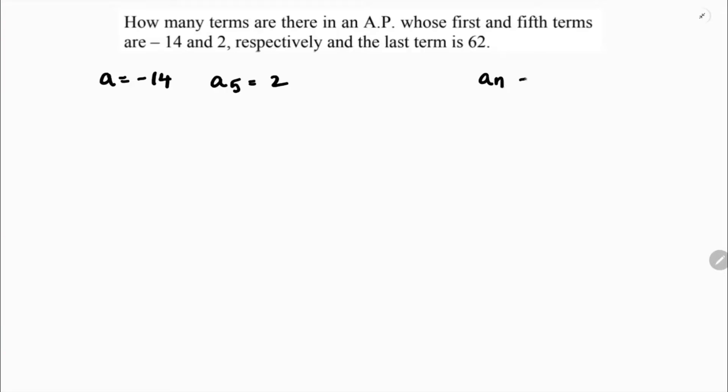Fifth term is given A5 which is 2. Last term nth term is given which is 62. AN formula is A plus N minus 1 into D is 62. We need to find N.